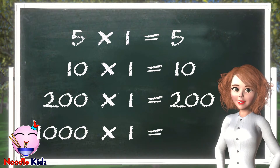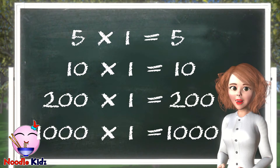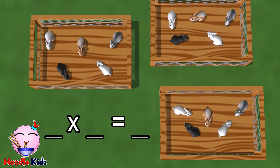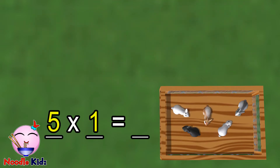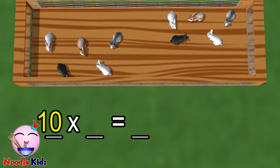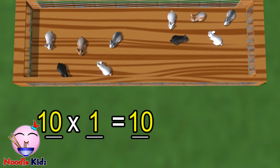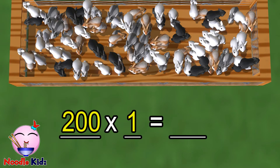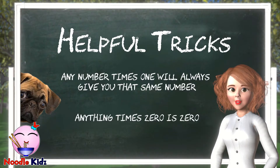What about one thousand times one? That is correct — the answer is one thousand. How come? Let's look at the bunnies and the hutches. One hutch has five bunnies, and there is only one hutch in the pen. How many bunnies are in the pen? Correct — five bunnies. Now, this one hutch has ten bunnies, and there is only one hutch. How many bunnies? Correct — ten bunnies. What about two hundred bunnies times one hutch? Yes — two hundred bunnies!